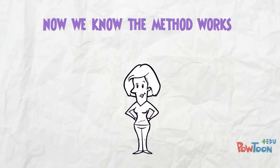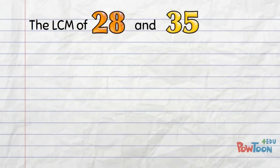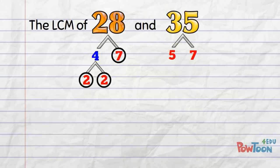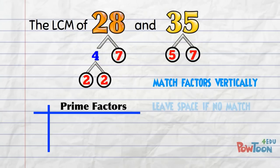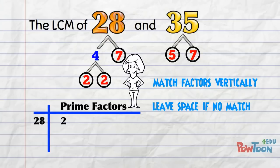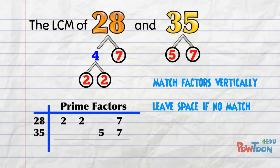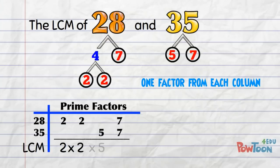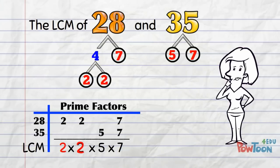Now let's try a slightly more tricky pair: 28 and 35. First, find the prime factors of each number. 28 is from 4 times 7; 4 is from 2 times 2. Circle the primes. 35 is from 5 times 7 — both prime. Next, we do the prime factors table, matching factors vertically: 28 is 2 times 2 times 7; 35 is 5 times 7. The prime factors of the LCM are 2 times 2 times 5 times 7. Working it out: 2×2=4, ×5=20, ×7=140.